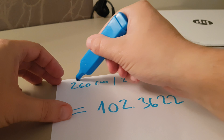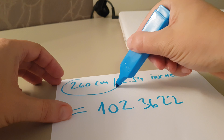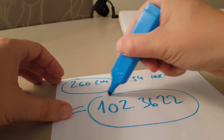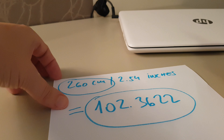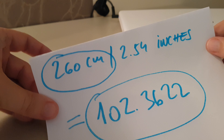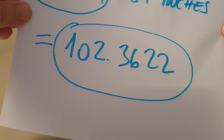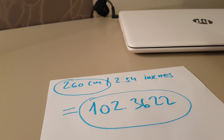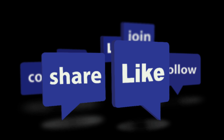Here is the solution again: 260 centimeters equals 102.3622 inches. Thank you for watching this video. If it was useful, please like it, share it, and subscribe. Bye bye!